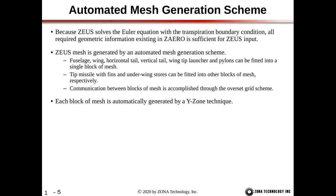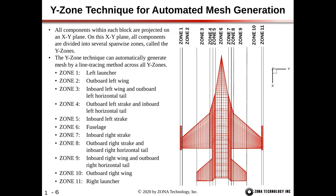The Y-zone technique is used for the automated mesh generation scheme. All components within each block are projected onto an XY plane. On this XY plane, all components are divided into several spanwise zones called Y-zones. In this example, we have a fuselage, a strake, a tail and wing, and a wing tip launcher. When all components are projected onto the XY plane, we get a flat surface — and importantly, none of the components are overlapping with each other, which is required.